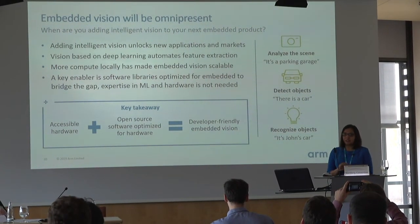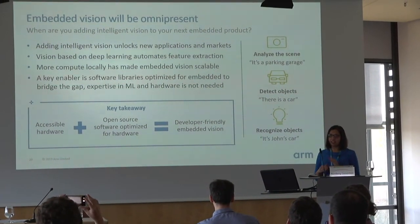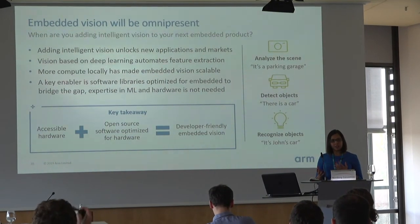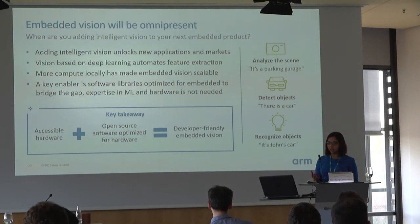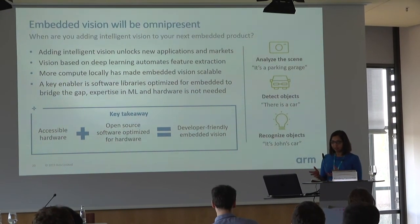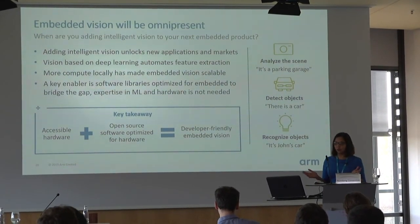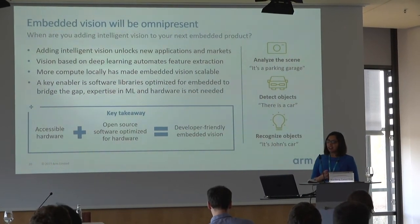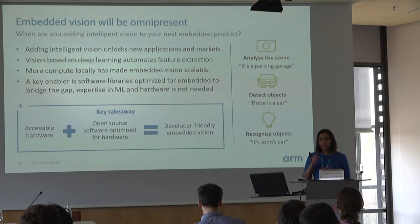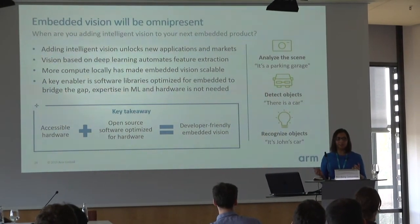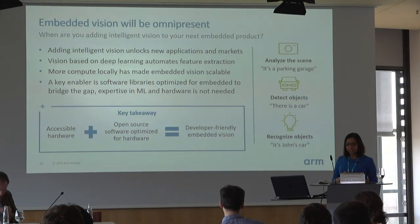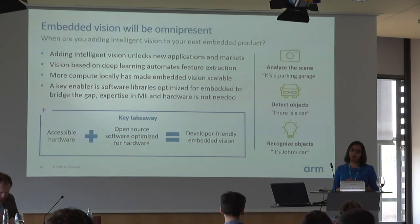I hope I've convinced you that Embedded Vision really unlocks a lot of markets and new applications and is estimated to have huge growth in the near future. This is enabled by technology shifts like deep learning gaining momentum and being accessible to everyone via automatic feature detection. Also, more compute is moving from the cloud to the edge, making it scalable. One of the key enablers for developer-friendly vision is software libraries, scripts, and open source software frameworks — meaning you don't really need to be an expert in machine learning and hardware to ride the wave of embedded vision. The final key takeaway is that accessible hardware combined with open source software makes developer-friendly embedded vision.